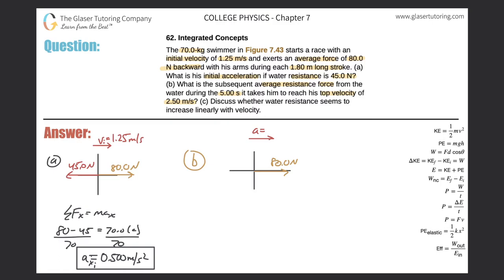Actually, I mean, we could find it, right? Remember, acceleration is change in velocity over change in time. They told us that the initial velocity is 1.25, the final velocity is 2.50, and it takes five seconds to go from 1.25 to 2.5.